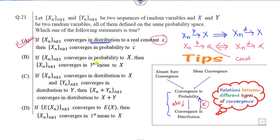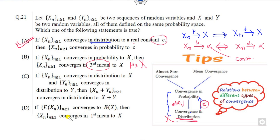If X_n converges in probability then X_n converges to the third mean, i.e., mu_3 — that can never be true. If X_n and Y_n each converge in distribution, their sum also converges in distribution — that is not always true. If E(X_n) converges to E(X), then X_n converges — that is not true; the reverse side is true. So the right answer is only A using this simple remark.